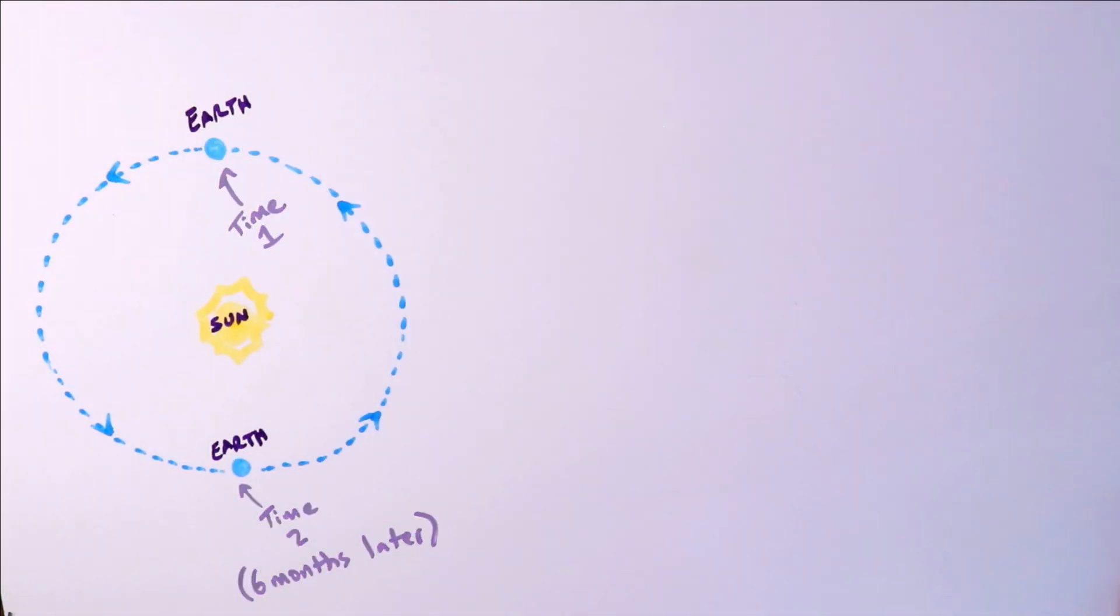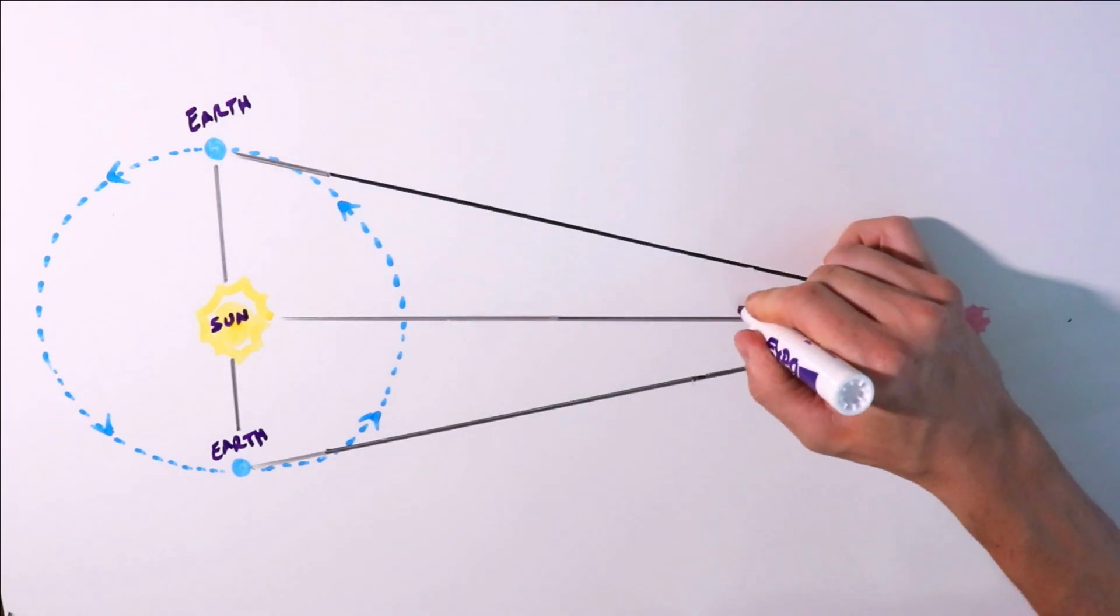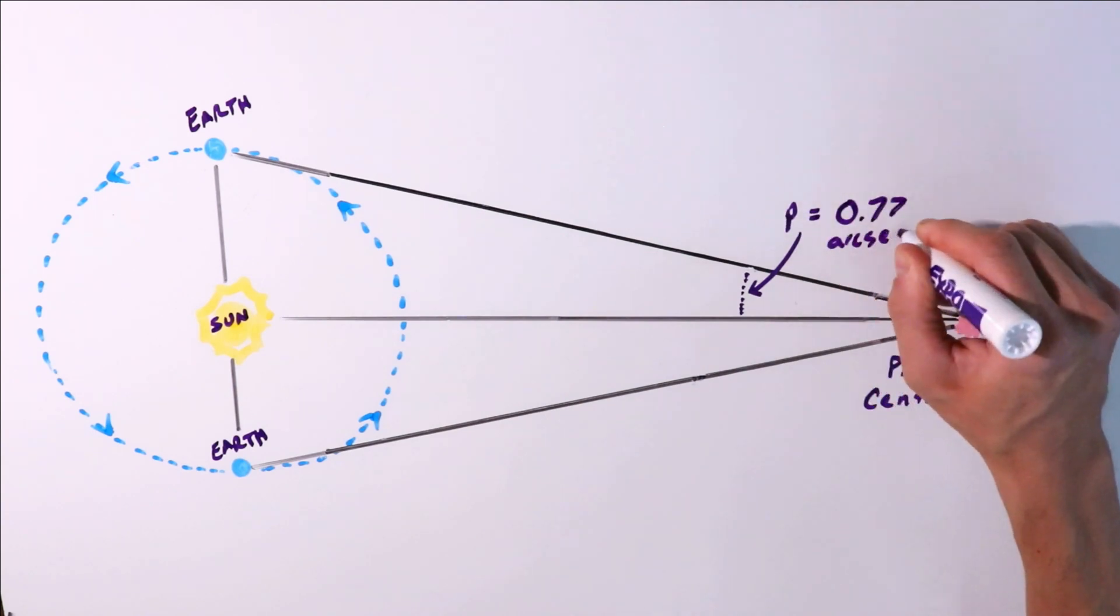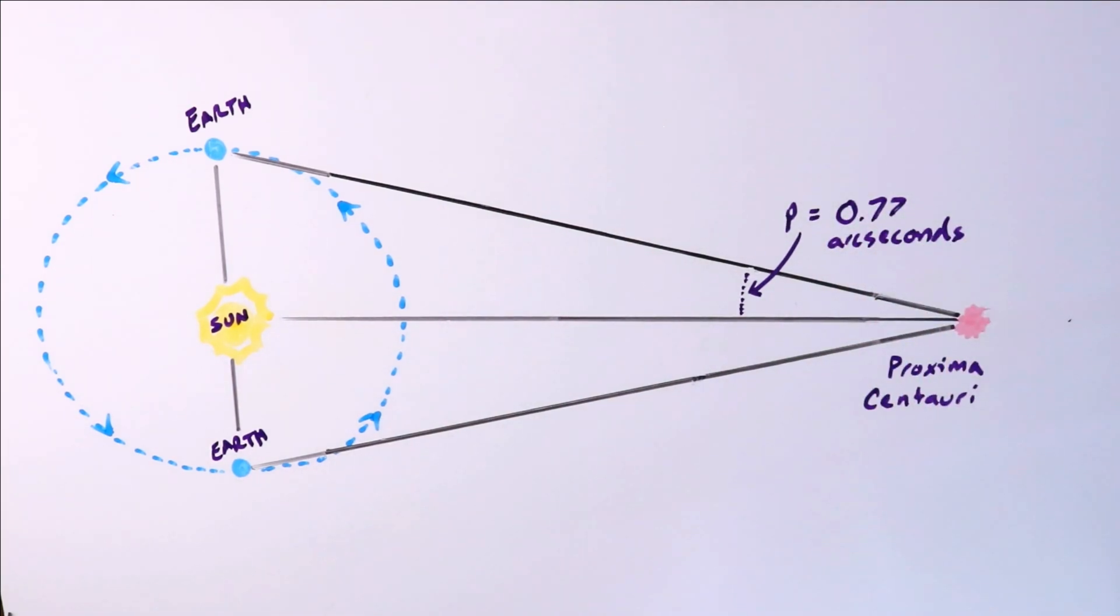The nearest star to our Sun is Proxima Centauri, a small red dwarf visible from Earth's southern hemisphere. The measured parallax angle of Proxima Centauri is 0.77 arcseconds.